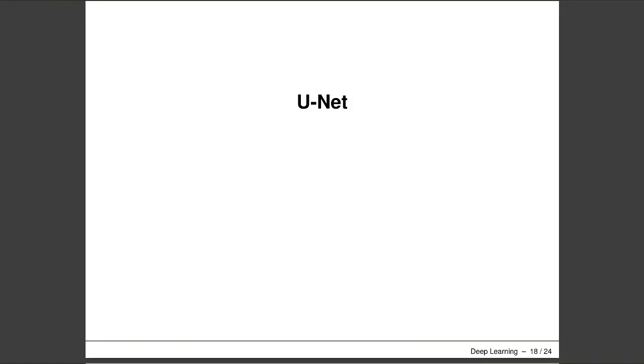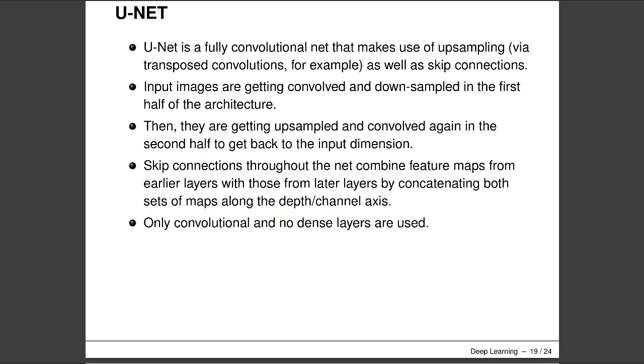U-Net architecture was proposed by Ronenberger et al. in 2015. The title of the paper is 'U-Net: Convolutional Networks for Biomedical Image Segmentation,' and it was accepted at MICCAI 2015. Since that time, it has been a standard network architecture for image segmentation, not only for the medical area but for other domains as well. As mentioned earlier, the U-Net architecture is an autoencoder composed of an encoder and decoder part. Both parts include fully convolutional neural networks. Different from a standard autoencoder, they also use skip connections in the decoder part, which helps combine feature maps from earlier layers by concatenating them with decoder feature maps in order to retain more information.